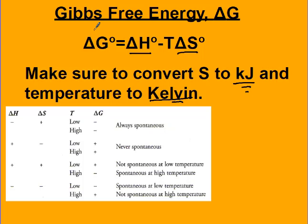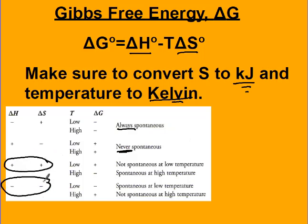Sometimes a reaction is always going to be spontaneous — that occurs when delta H is negative and delta S is positive. It's never spontaneous if delta H is positive and delta S is negative. If the signs for H and S are the same, then it's going to be temperature dependent. If they're both positive, it's spontaneous at high temperatures. If they're both negative, it's spontaneous at low temperatures.